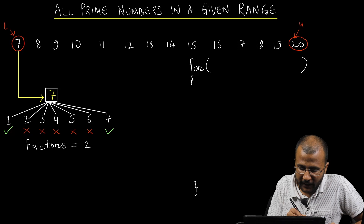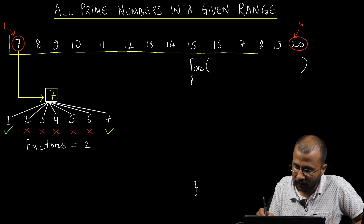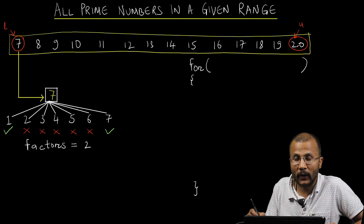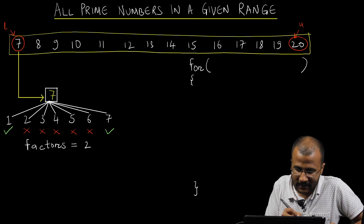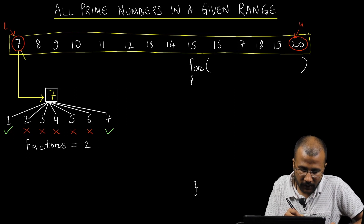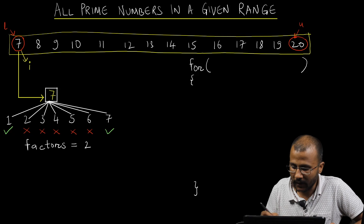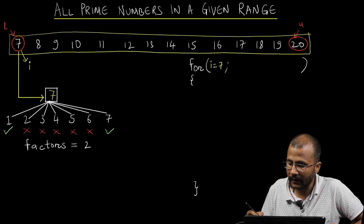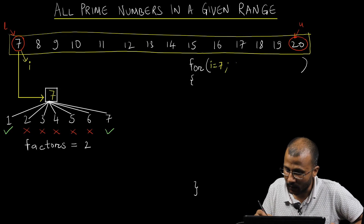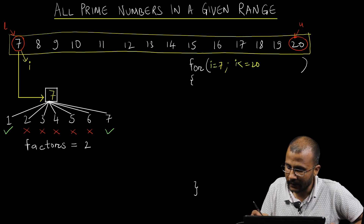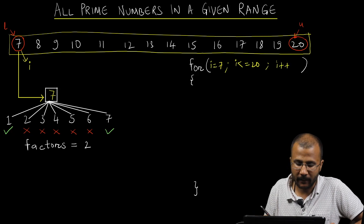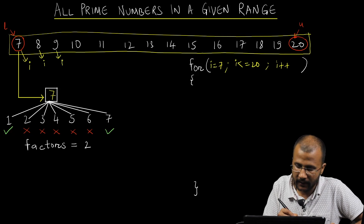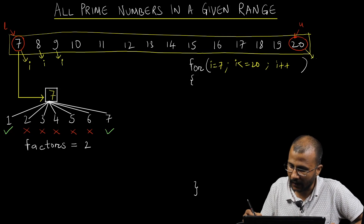First of all, I know that I need to run a loop on these numbers starting from the lower limit L, which is 7, to the upper limit U, which is 20 in this case. Let's say each of these numbers is i. Initially i is 7, so I initialize i to 7. The last value of i is 20, so i is less than or equals to 20, and each time I increment the value of i by 1.